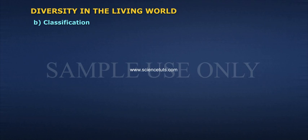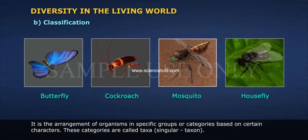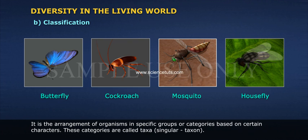Classification: It is the arrangement of organisms in specific groups or categories based on certain characters. These categories are called taxa.